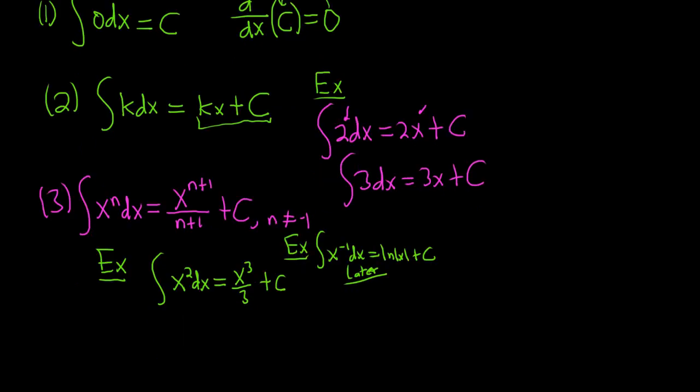And you can convince yourself that this works by checking your answer. If we take the derivative of this piece, we would get 3x squared, right? Bringing the 3 down, over 3 plus 0. So this goes away. So you just get x squared. Yep, checks. Looks good, x squared.